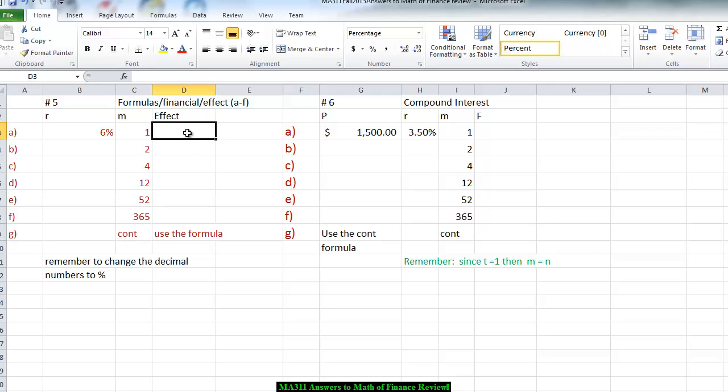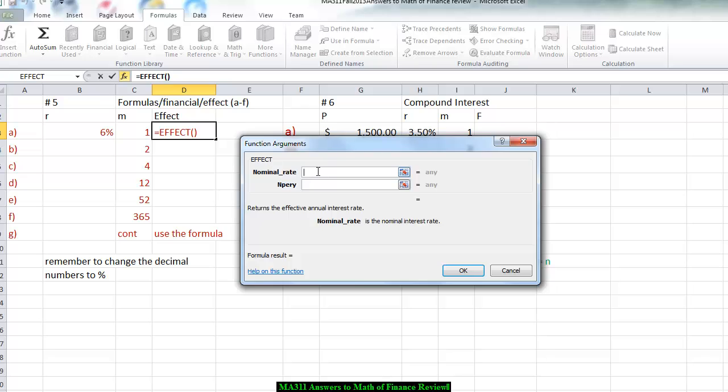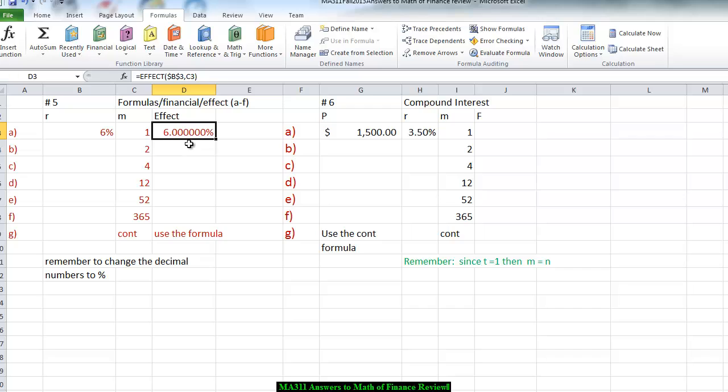Well, we can do this using the effective interest rate for once a year. In order to do that, the easiest thing to do is to go to formulas, go to financial, and look for the word effect. Effect tells us we're taking the nominal rate, which is 6%. I would like to be able to copy this, so I'm going to press F4, or on your Mac, you're going to go to the compose button or control button together with the letter T. The N per is the M, the number of times per year. We have 0.06. We press OK, and that gives us the answer.